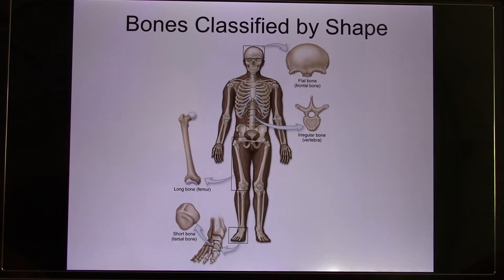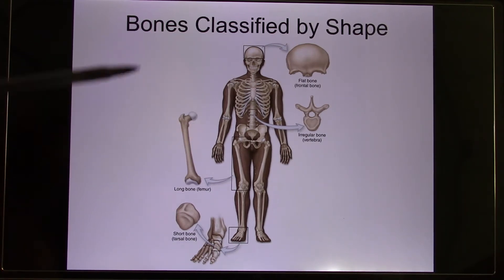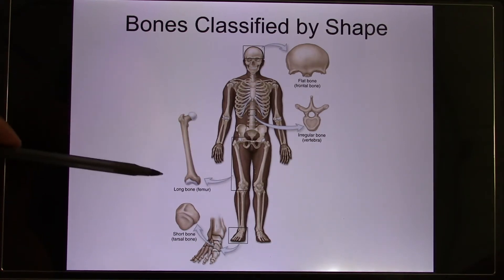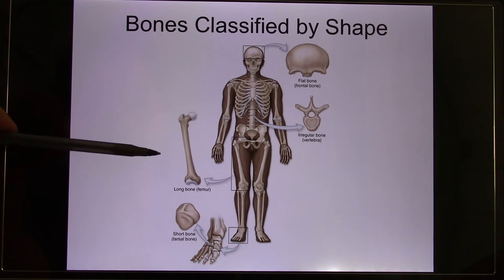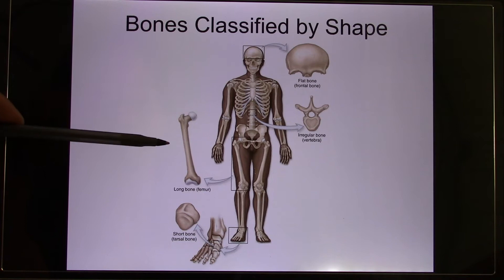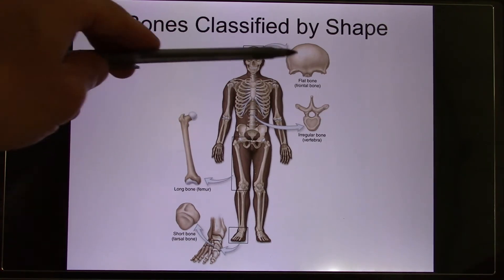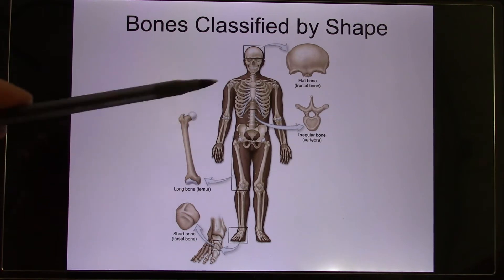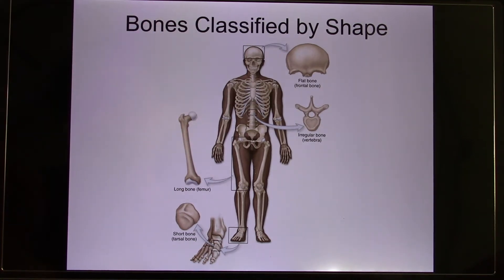Bones can be divided into different shapes. We put those 206 bones into different shape categories. If they have a long structure — not long distance, so you can have a very short long bone, like your finger, your phalanges — these are the long bones, based on shape. If they are flat, we call them flat bones. And you have the short bone. If it does not belong to these three, we call them irregular. So there are totally four different kinds of bone shapes.